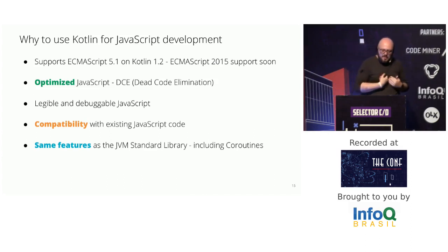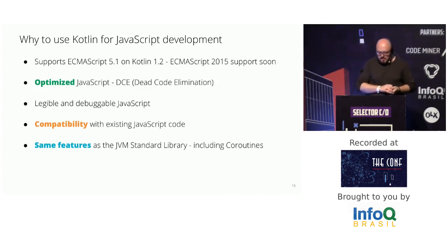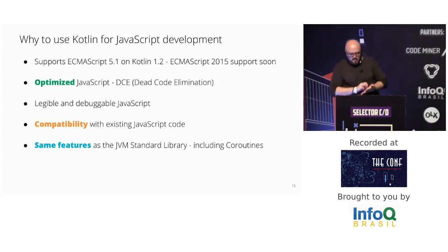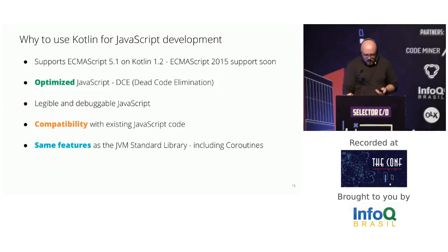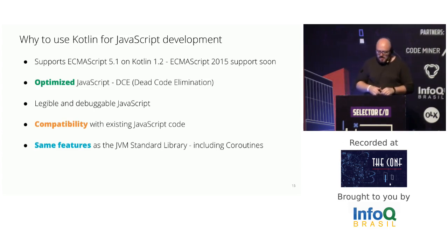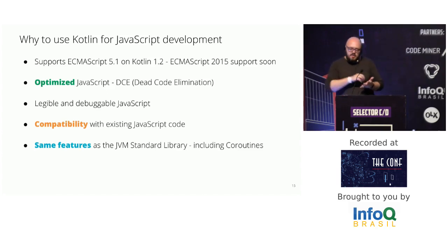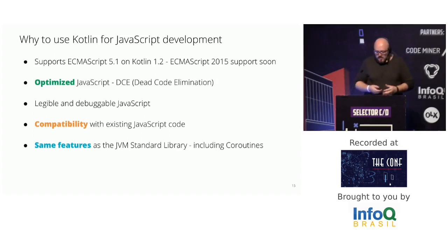Why would you use Kotlin for developing JavaScript applications? Since version 1.0, Kotlin transpiles to JavaScript. At the moment the generated code is ECMAScript 5.1, but there are plans to upgrade to newer versions. Kotlin includes a mechanism called DCE — Dead Code Elimination. With this plugin, the final JavaScript will be shrunk and unused code will be cleaned up from the generated output, resulting in very small applications, even when using frameworks like React.